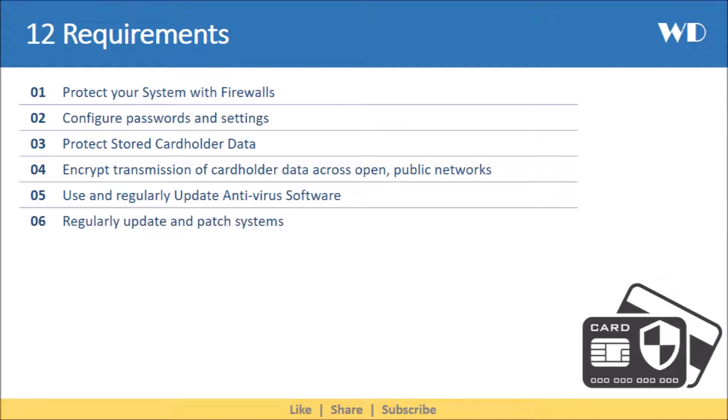The sixth requirement is to regularly update and patch systems. Many security vulnerabilities are fixed by patches issued by software vendors. Organizations should establish a process to identify security vulnerabilities and rank them according to their level of risk. Relevant security patches should be installed within a month of their release to protect against cardholder data compromise.